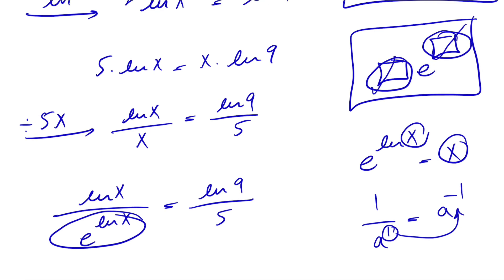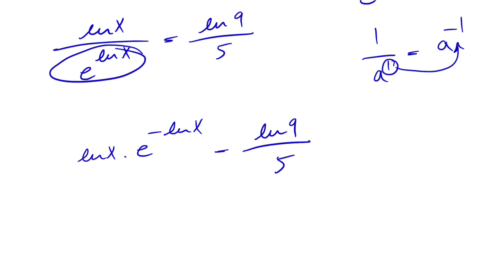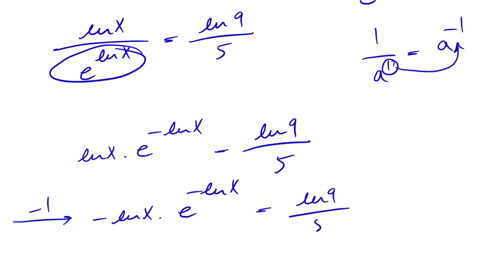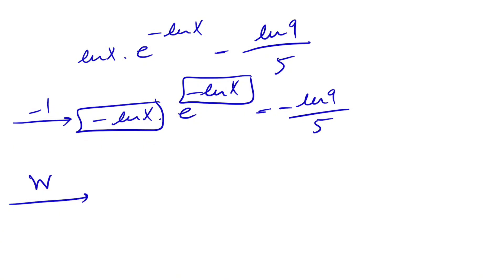Looking at the Lambert W function, we need both boxes to be the same. What we can do is multiply a negative into this equation to build the box we're looking for. So we get: -ln(x)·e^(-ln x) = -ln(9)/5. And there we go — we've built that box.